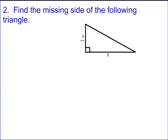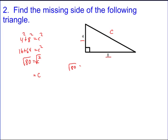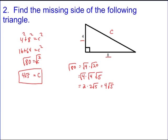Number two: find the missing side of the following triangle. Four and eight are the legs; we don't know the hypotenuse, so that's C. We get four squared plus eight squared equals C squared, so sixteen plus sixty-four equals C squared, giving us eighty equals C squared. Take the square root. I don't know what the square root of eighty is off the top of my head, so I'll simplify. Square root of eighty equals square root of four times square root of twenty, and square root of twenty equals square root of four times square root of five. So eighty is four times four times five, giving two times two times square root of five, which equals four root five. Always simplify your answers when you end up with square roots.